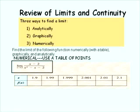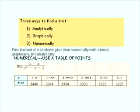Since we want our x value to approach 2, in the table we have x values which are getting increasingly close to 2 from both the left and the right sides. Replacing x with each of these values in the function yields the following y values. We can see that as x gets closer and closer to 2, the y value appears to be getting closer to 0.3 repeating. So our numerical analysis indicates that this limit is equal to one-third.